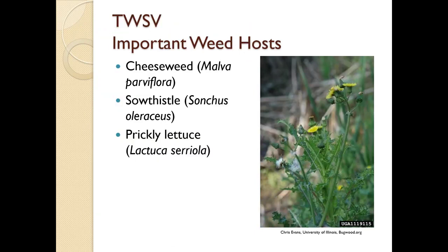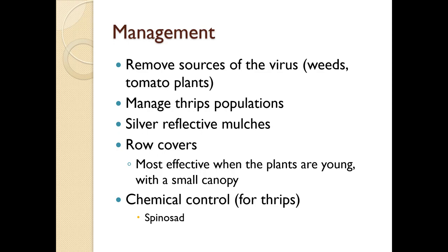Weeds such as cheeseweed, sow thistle, and prickly lettuce can provide inoculum for viruses. Management includes removing sources of the virus, managing thrips populations — silver reflective mulches can repel them — and using row covers, which are most effective when plants are young with a small canopy. Chemical control targets the thrips, and spinosad is an organic product option.